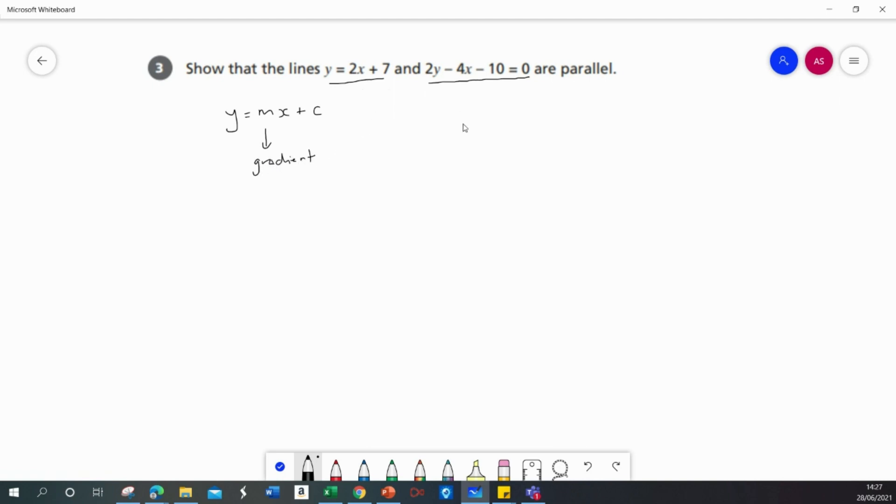Now for the first equation, y equals 2x plus 7, then the gradient is 2. We can see that if we look at the form y equals mx plus c and look at m, we can see that m is 2 for that line.